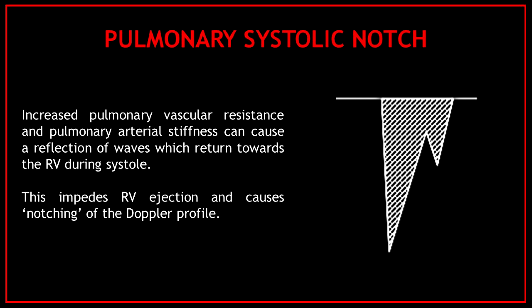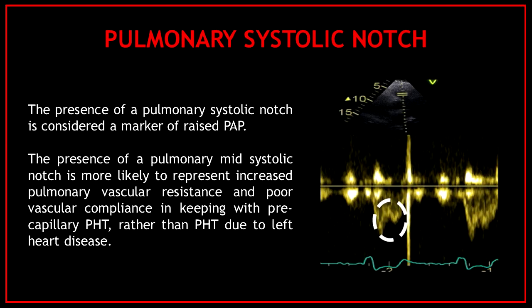Increased pulmonary vascular resistance and pulmonary arterial stiffness can cause a reflection of waves which return towards the right ventricle during systole. This impedes right ventricular ejection and causes notching of the Doppler profile. The presence of a pulmonary systolic notch is considered a marker of raised pulmonary artery pressure and is more likely to represent increased pulmonary vascular resistance and poor vascular compliance, in keeping with precapillary pulmonary hypertension rather than pulmonary hypertension due to left heart disease.